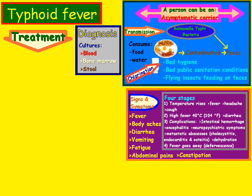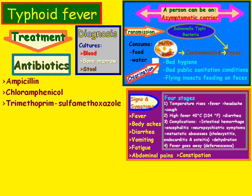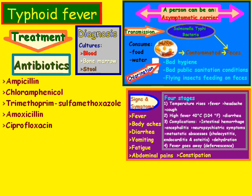There are several methods of treatment for typhoid fever. First, there are antibiotics such as ampicillin, chloramphenicol, trimethoprim-sulfamethoxazole, amoxicillin, ciprofloxacin, and fluoroquinolones. One thing to keep in mind with antibiotics is that some strains of salmonella bacteria can over time become resistant to certain types of antibiotics.